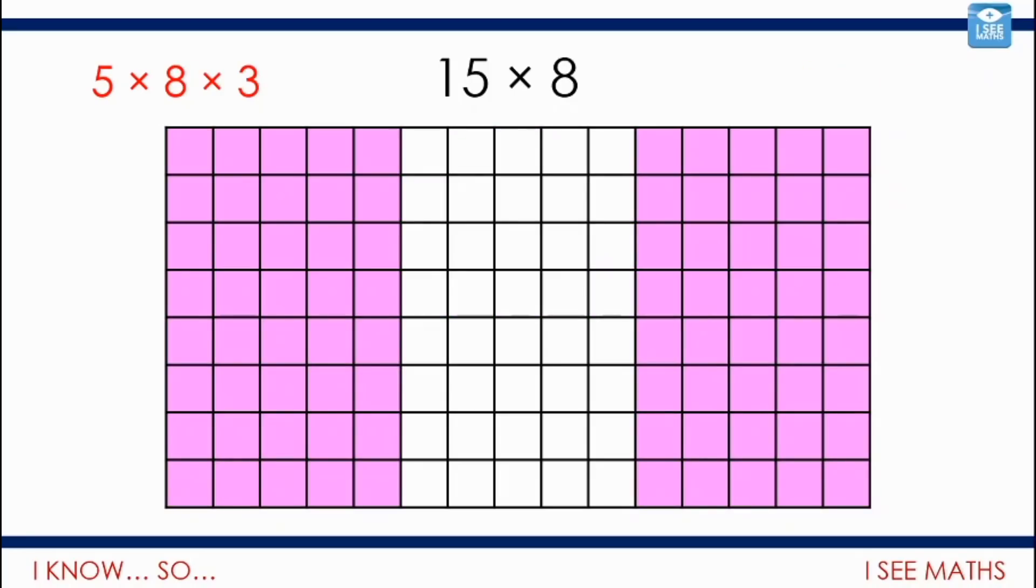Equally, it could be that I split it up into 3 sections. So, I could do 5 times 8 and 5 times 8 and another 5 times 8. So, 5 times 8 and then multiply that by 3. So, 5 8's of 40. 40 times 3 is 120. So, lots of room for flexibility there.